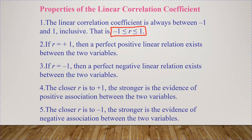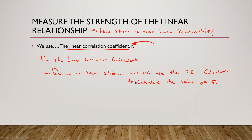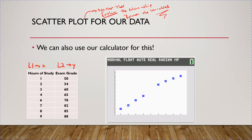If r equals positive 1, a perfect positive linear relationship exists between the variables — you'll see a perfect straight positive line in your data. That's not something you'd often see in the real world. Looking back at our example, it's definitely not a perfect straight line; it deviates just a little.